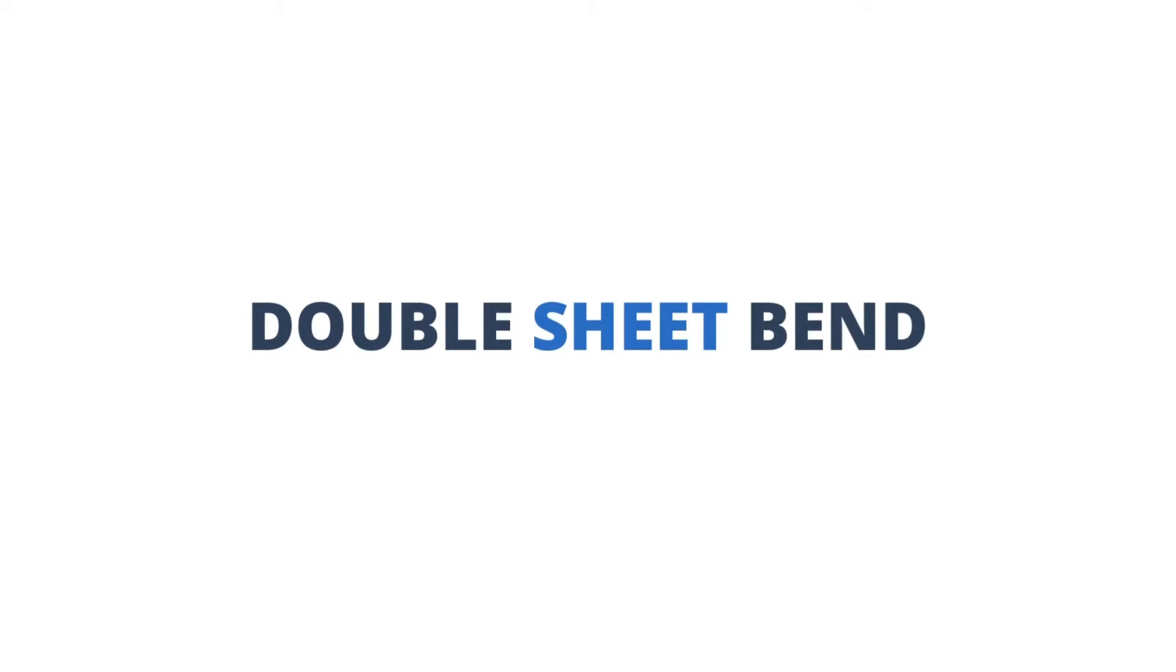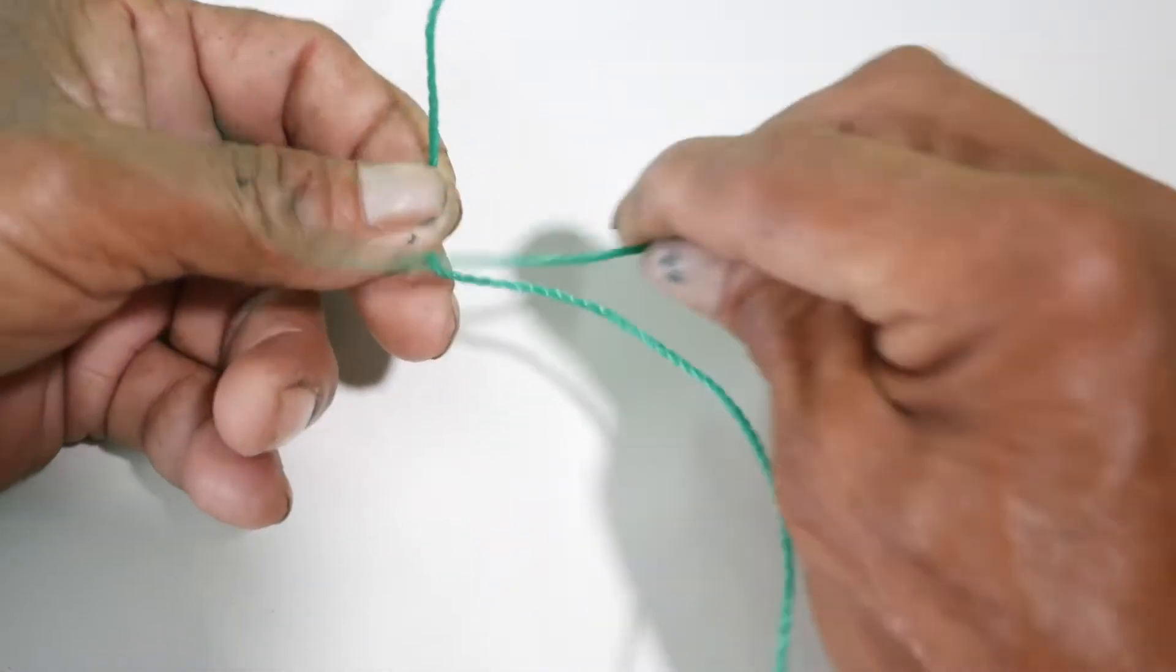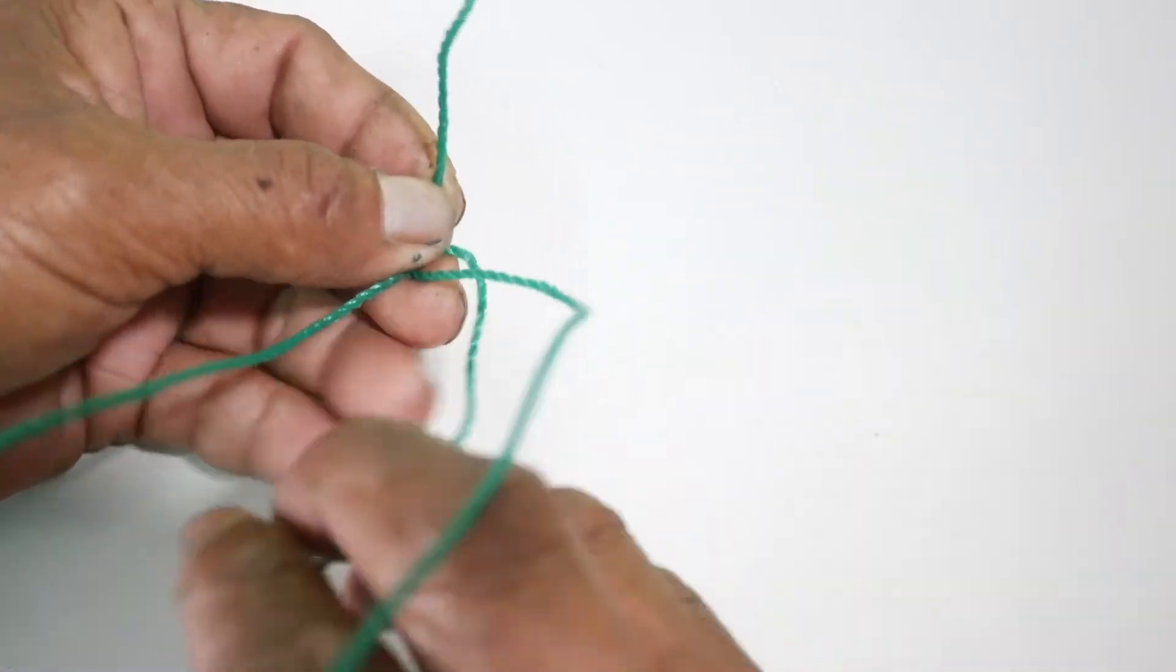The double sheet bend is the reinforced version of sheet bend if it cannot cope with the unequal diameter of the lines you are trying to join.